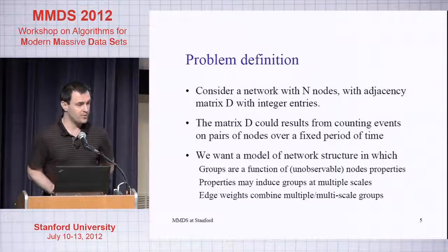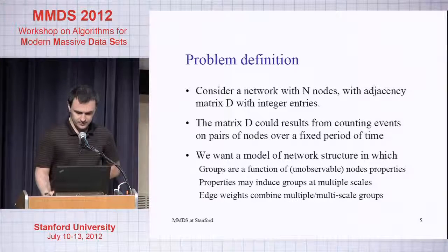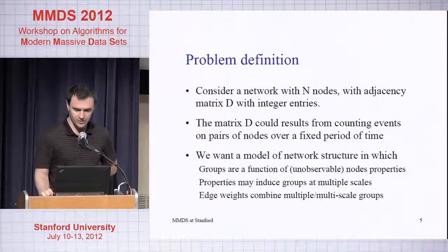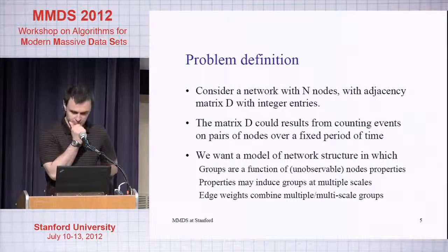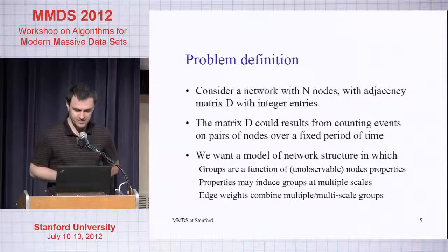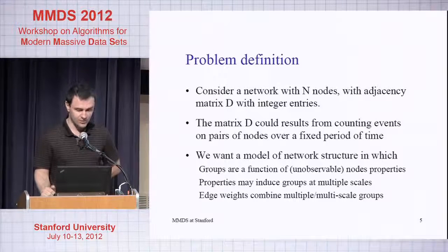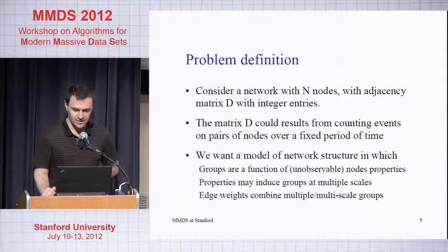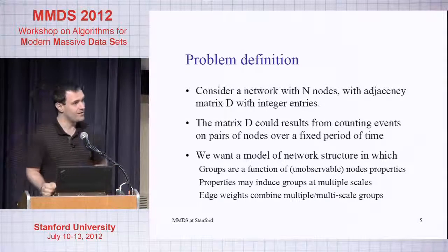We accumulate them over a period of three months. What do we want? We want a model of network structure for which groups are going to be a function of some unobservable properties, and the properties are binary factors and they will induce groups of multiple scales.